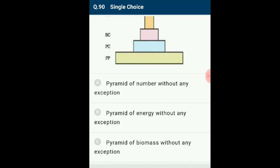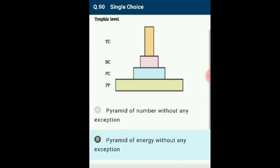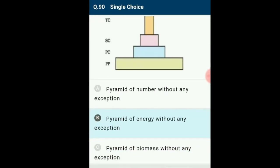Question 90: Types of ecological pyramids. The pyramid of numbers appears in upright condition — a single tree ecosystem (single tree) may give place to many insects, fewer smaller birds, and very few large birds. The pyramid of biomass is usually upright; in the sea, biomass of fishes is more than phytoplankton. The pyramid of energy is always upright with no exception. The answer is option B: pyramid of energy, always without any exception.